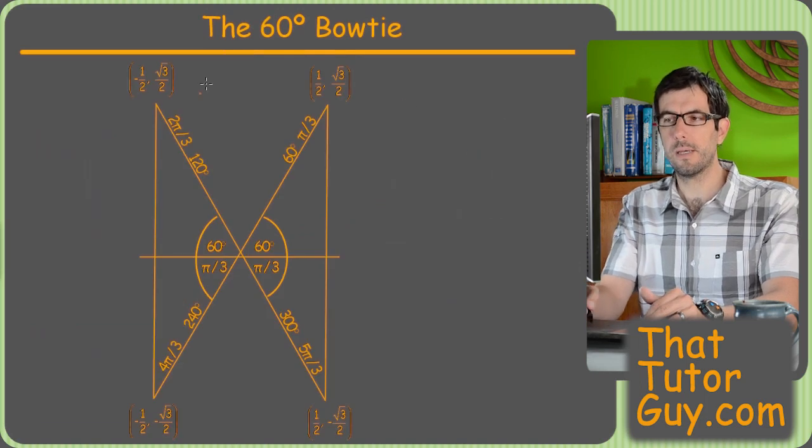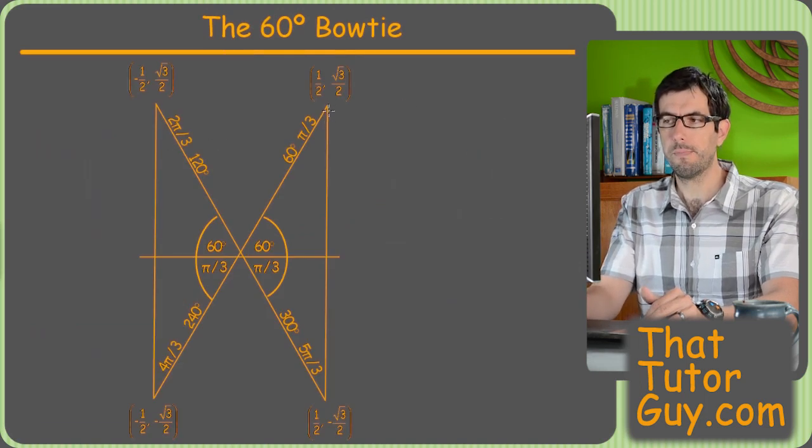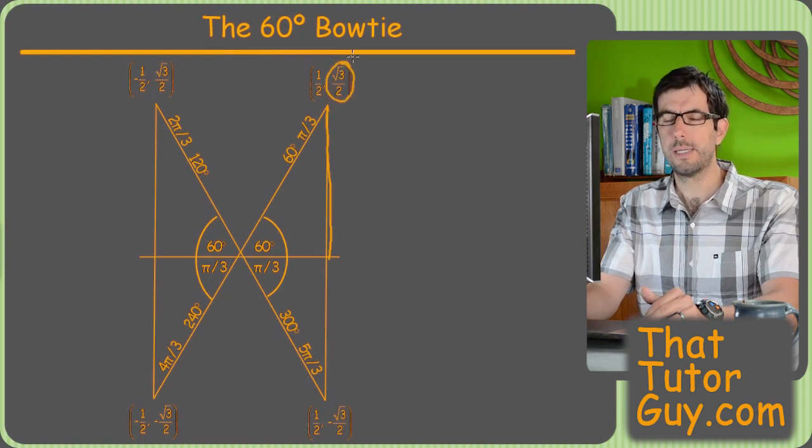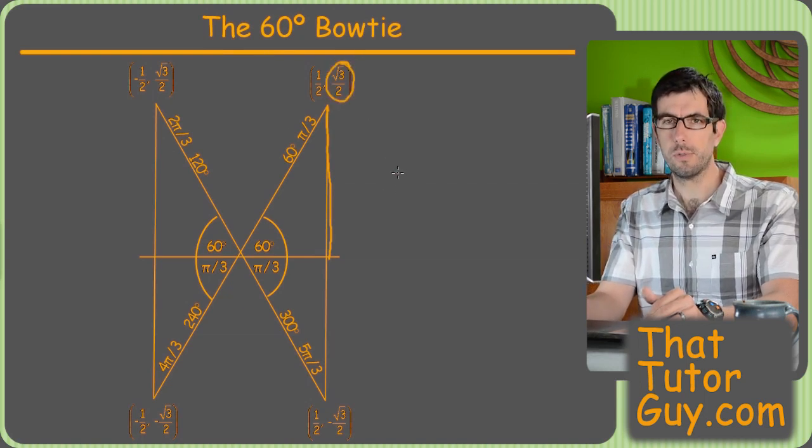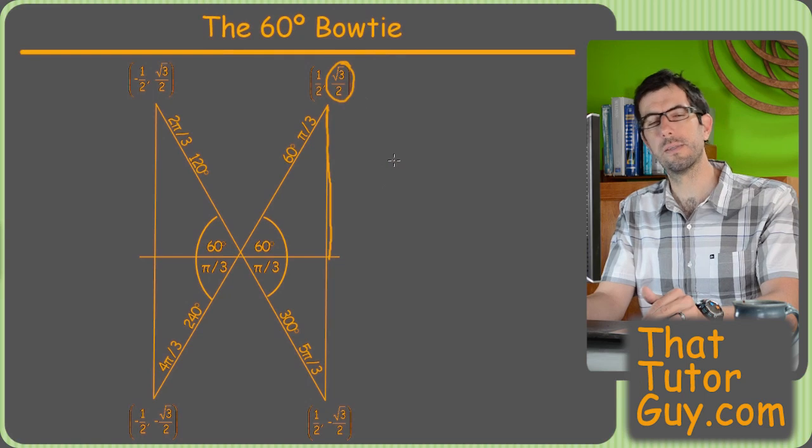And that really helps you on the 60, too, because now the longer side is the vertical one, or the y coordinate. So, that's how you can remember that the root 3 over 2 goes second in the 60 degree bowtie.